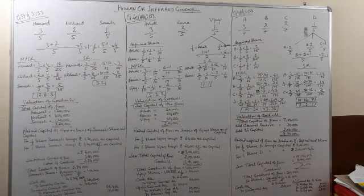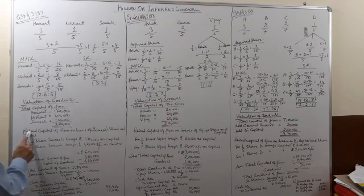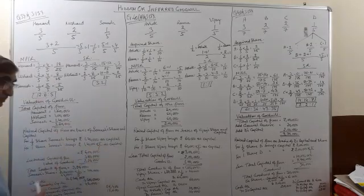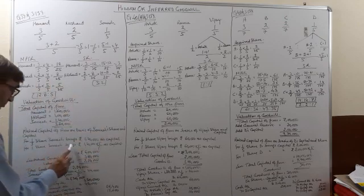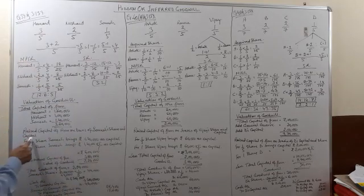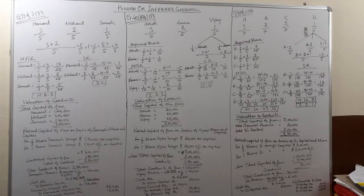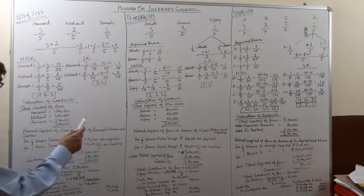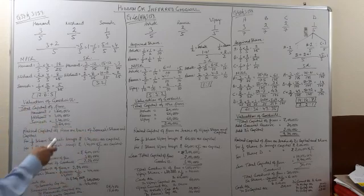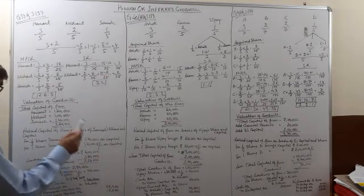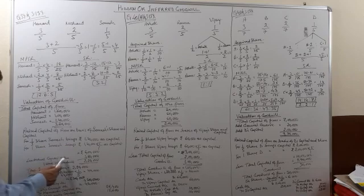Now we calculate the raised capital on the basis of the new partner's share and capital. For 1/5 share, Somesh brings Rs 1,20,000. So for the entire firm (1 full share), we multiply: Rs 1,20,000 × 5/1 = Rs 6,00,000. This is the raised capital. From the raised capital we subtract the actual capital of the firm: Rs 6,00,000 − Rs 3,80,000 = Rs 2,20,000. So Rs 2,20,000 is the value of goodwill.